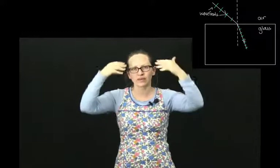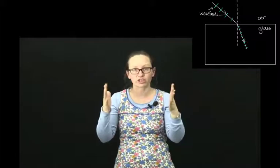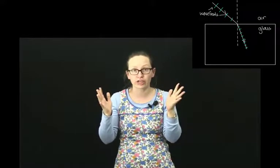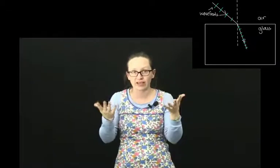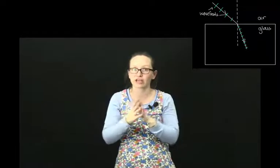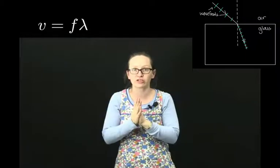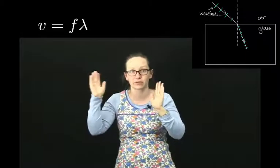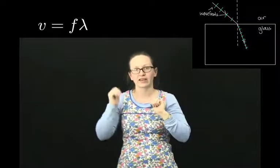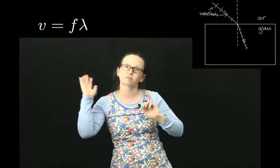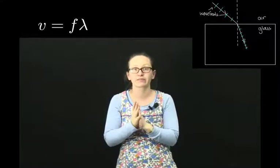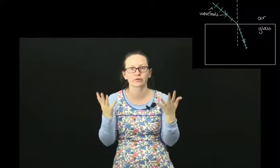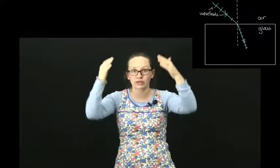When light goes from one medium to another, the frequency of the light doesn't change. However, lots of things do change. The light bends, and so the angle changes. It can speed up or slow down — slow down if it's going into a more optically dense medium. And because of our wave equation, that the speed is equal to the frequency times the wavelength, if the speed is changing and the frequency is staying the same, then we know that the wavelength has to change as well.